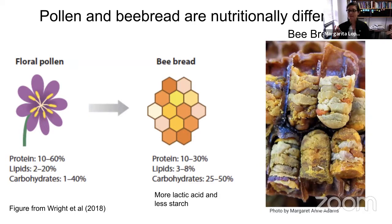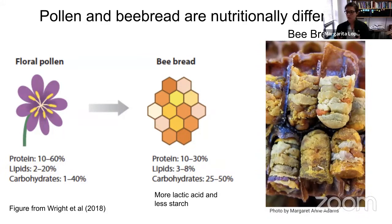The bee bread is not simply raw pollen — there is a process driven by bacterial activity that transforms that raw pollen into bee bread through fermentation. Nutritionally, bee bread is different from raw pollen: there is increasing lactic acid due to the action of Lactobacillus, and there is less starch because that is part of what is being used for the fermentation.